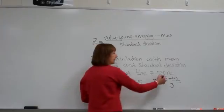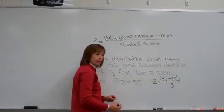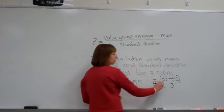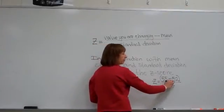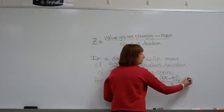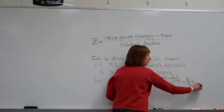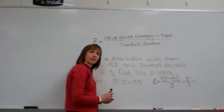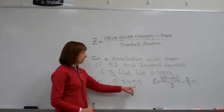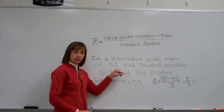When we carry out the operations — remember the fraction bar is a grouping symbol — you'll want to open parentheses, enter 55 minus 52, close parentheses, then divide by 3. That gives us 3 divided by 3, which is a z-score of 1. That's exactly what we anticipated, because 55 was exactly one standard deviation bigger than 52.